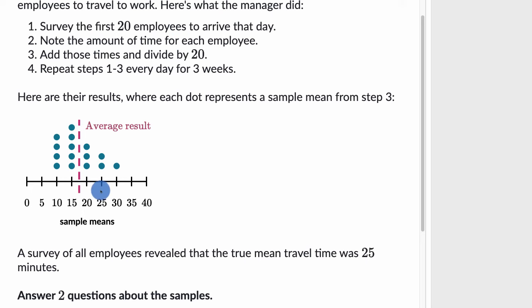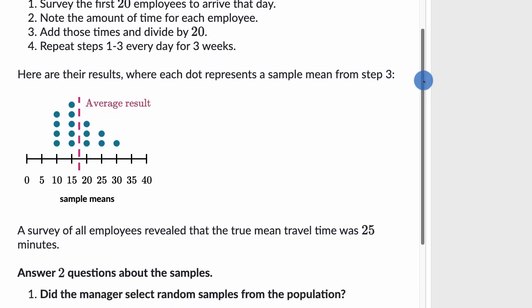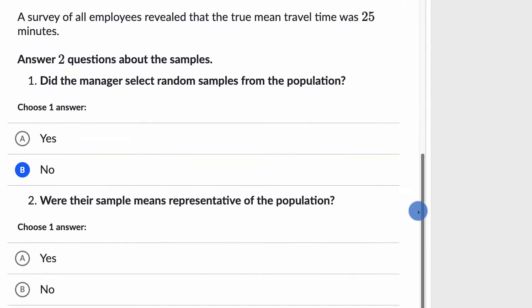But we also know what the true population mean is, and it's definitely not representative. This is much shorter travel time. It seems like the people who were coming to work earlier have less of a commute than the broader population. So is it representative of a broader population? No.